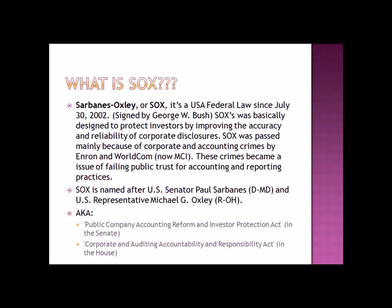SOX was passed mainly because of corporate and accounting crimes by Enron and WorldCom. These crimes became an issue of failing public trust for accounting and reporting practices. SOX is named after US Senator Paul Sarbanes, a Democrat from Maryland, and United States Representative Michael G. Oxley, a Republican from Ohio. Some other names for SOX are the Public Company Accounting Reform and Investor Protection Act in the Senate, and the Corporate and Auditing Accountability and Responsibility Act in the House.